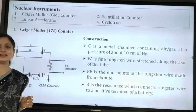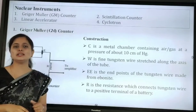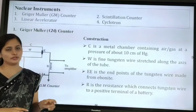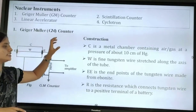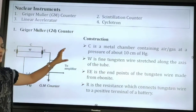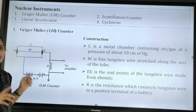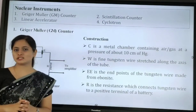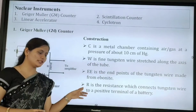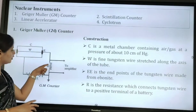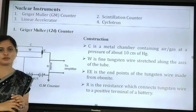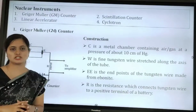To summarize the construction: C is the metallic chamber containing air or gas at a pressure of 10 centimeters of mercury. W is the center wire made of fine tungsten. EE are the end points of the tungsten wire made of ebonite. R is connected to W as well as to the positive terminal of the battery.